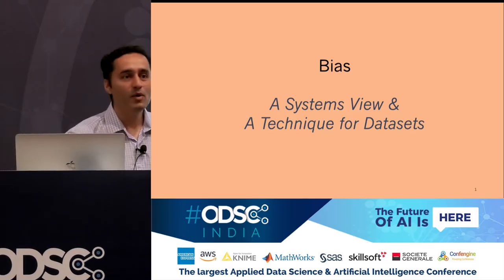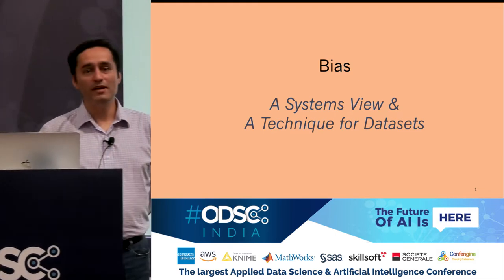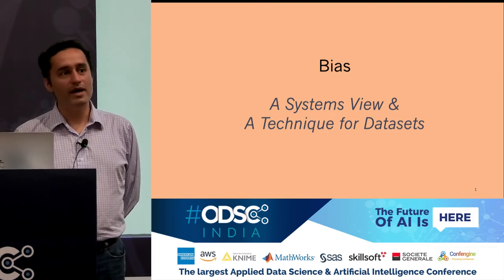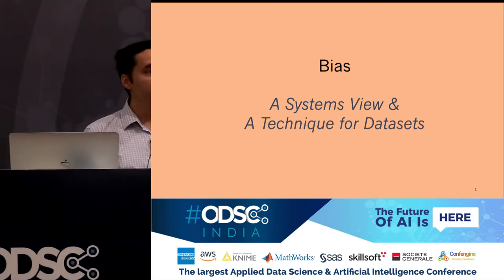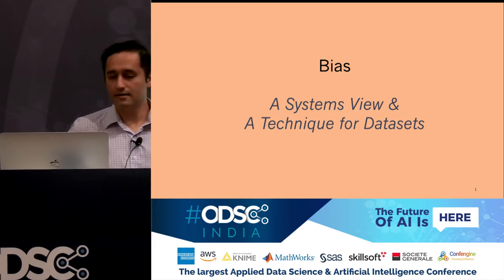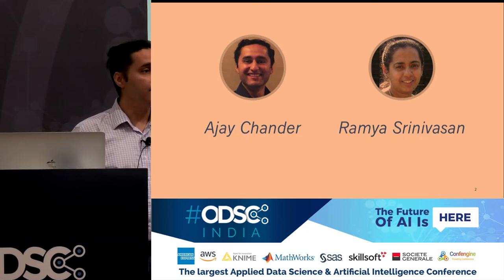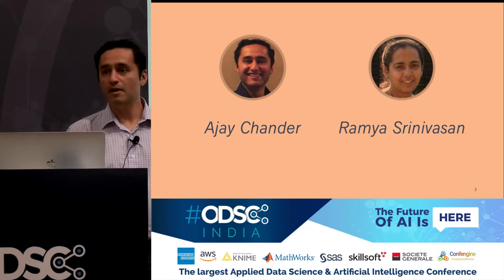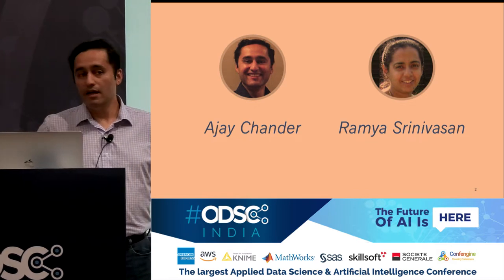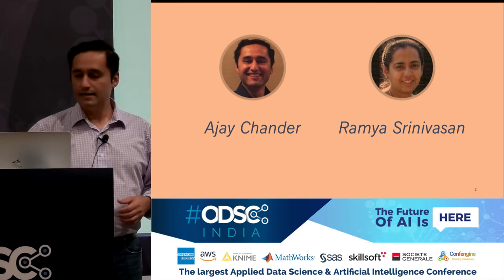Welcome to this session. My name is Ajay, and I'm delighted to be here. We're going to share some perspectives about bias — a systems view of bias that helps you as developers, designers, and product leaders think about it when you build AI systems — and a technique for detecting bias in data sets. This is a talk by me and my colleague Ramya Srinivasan. We'll start with bias in a big picture sense, then in the second half speak about a data set technique.